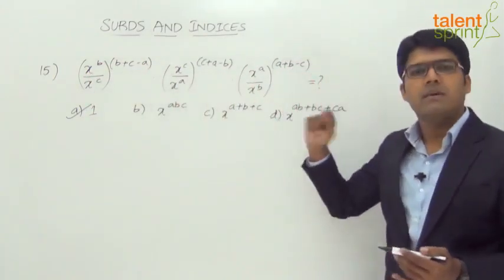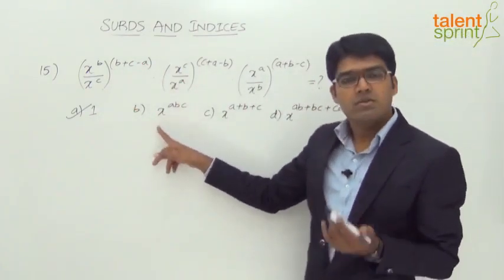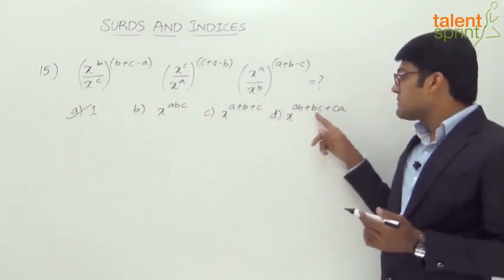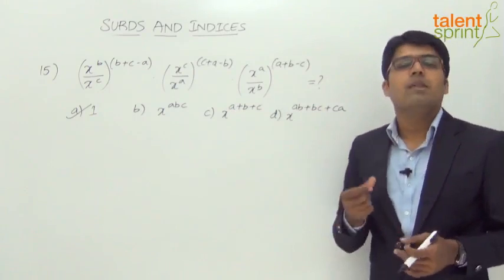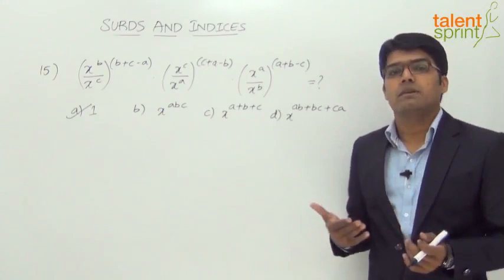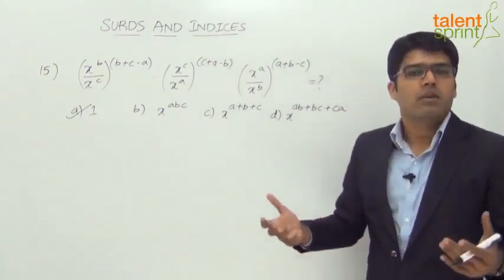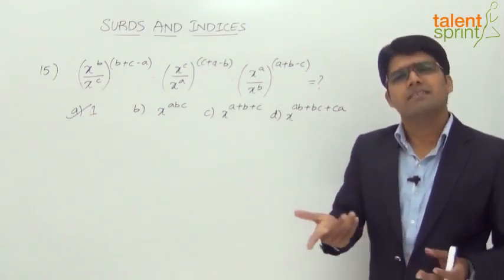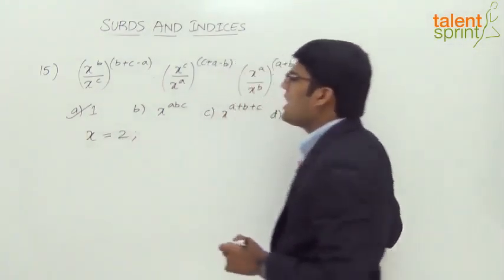So x=1 doesn't help. We need a value greater than 1. Also, avoid large numbers like 12 or 8 as they make calculations complex. Let us try x=2. For a, b, c, we can take any values, but we should ensure that no more than one option satisfies the expression. Let us assume x=2.